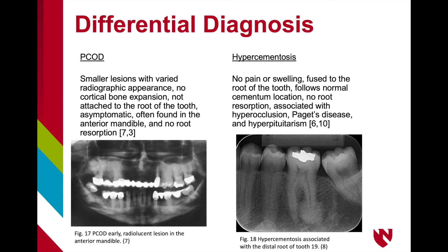PCOD is most commonly found in the anterior mandibular region and is asymptomatic. The radiographic presentation varies, from early lesions being radiolucent to mixed, to late lesions being mostly radio-opaque with borders that are not well defined. PCOD lesions are normally smaller in size and do not cause cortical bone expansion.